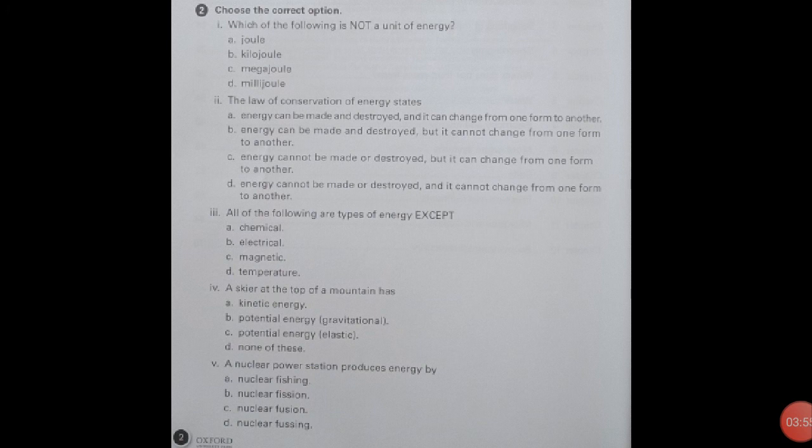Number fifth: A nuclear power station produces energy by nuclear fission, nuclear fusion, or nuclear fusion and nuclear fission. Here B option is correct: Nuclear fusion. Nuclear power station produces energy by nuclear fusion.